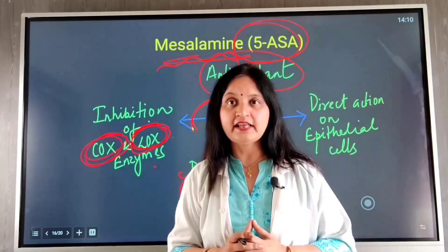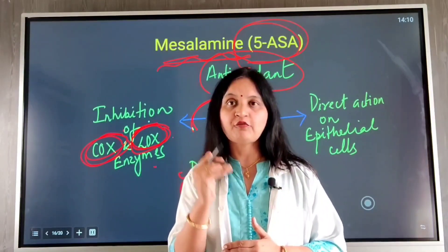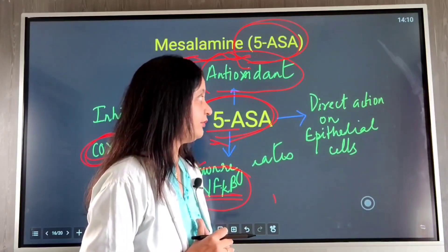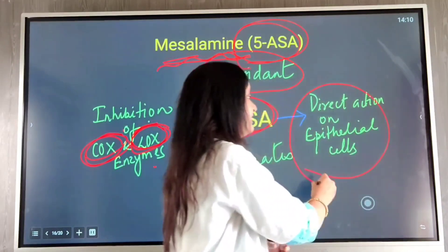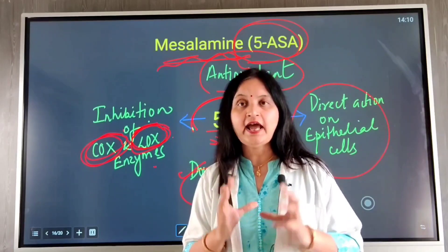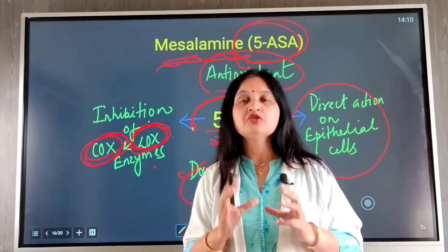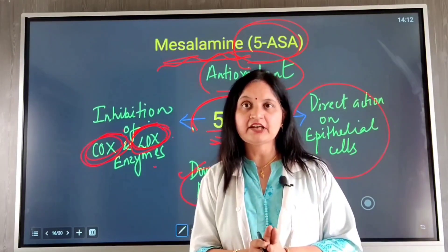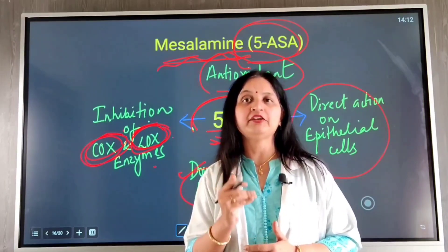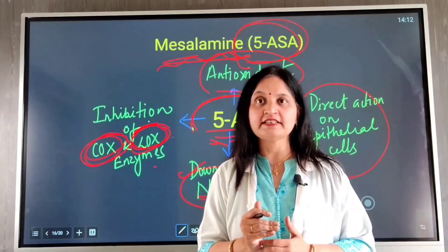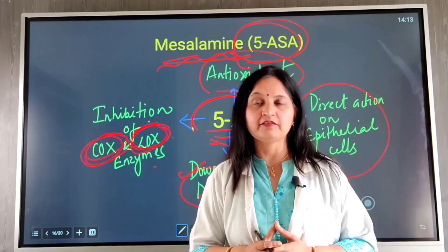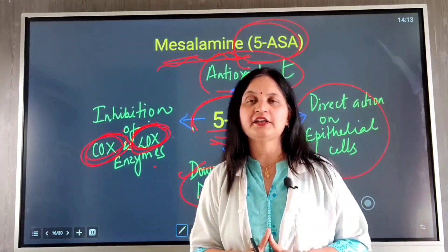5-aminosalicylic acid protects the epithelial layer from bacterial toxins and oxidative free radicals, inhibiting damage to the intestine and reducing symptoms. It also has direct action on the epithelial cells, promoting healing of the intestinal layer. Overall, 5-aminosalicylic acid exerts anti-inflammatory action, antioxidant action, and promotes epithelial healing, helping to induce and maintain remission, reduce disease progression, and reduce complications such as toxic megacolon or intestinal perforation.